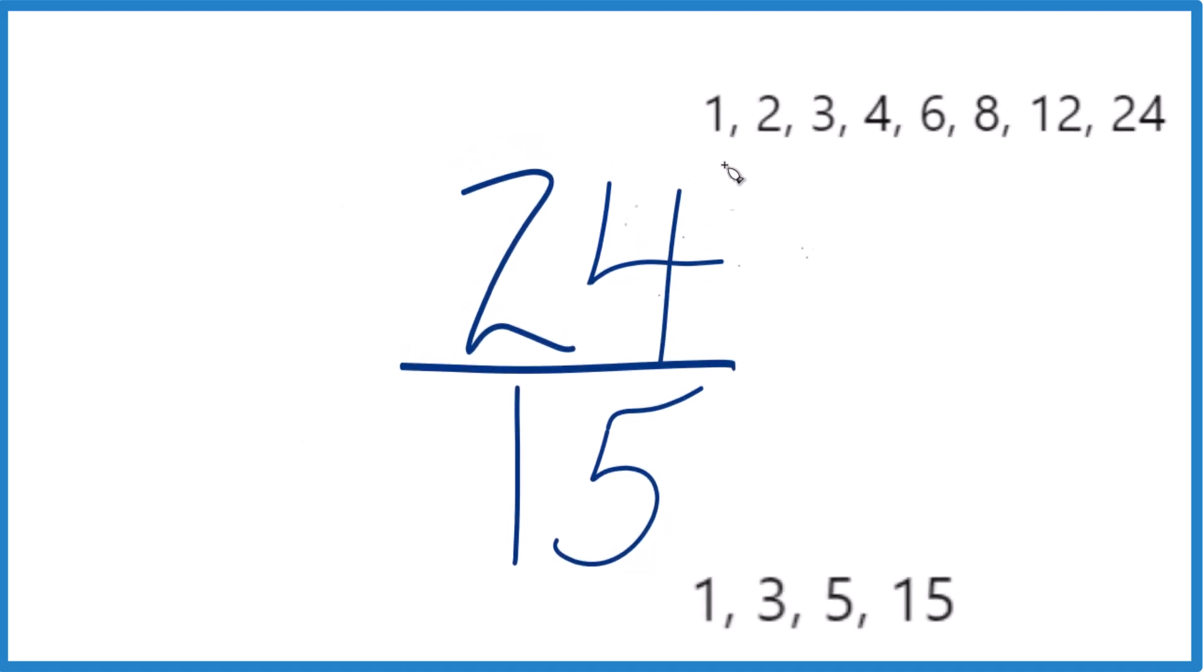Here they are. We want the greatest common factor. 1 goes into both of them, that makes sense. 2, no. 3 - we have 3 and 3. 5, no. 15.